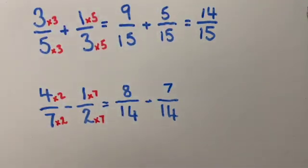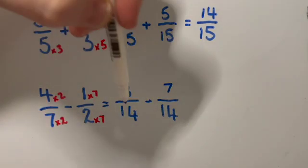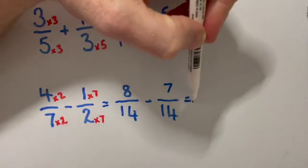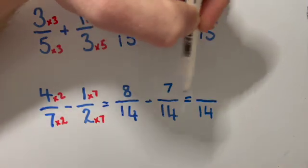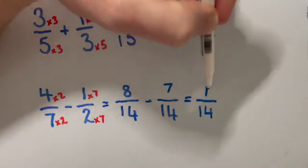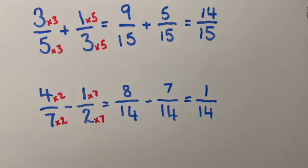Now that I've got my denominators the same, we know that the answer is going to be the same denominator, eight take away seven equals one. So my final answer is one over 14.